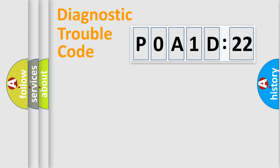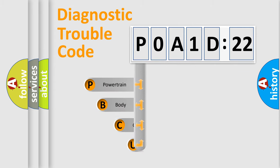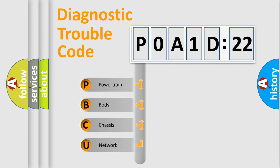We divide the electric system of automobile into four basic units: Powertrain, Body, Chassis, and Network. This distribution is defined in the first character code.